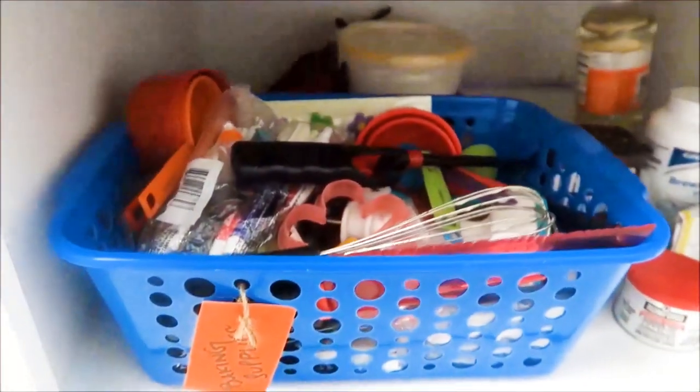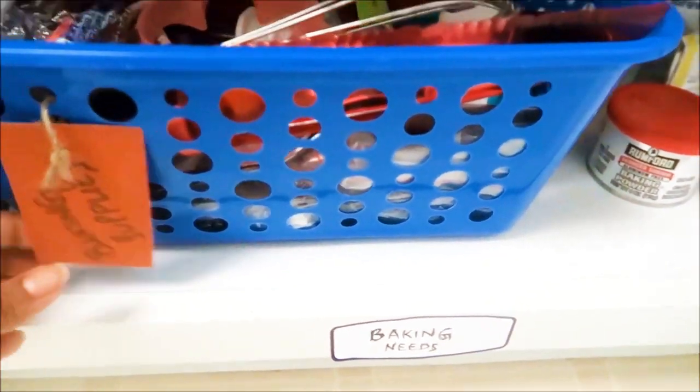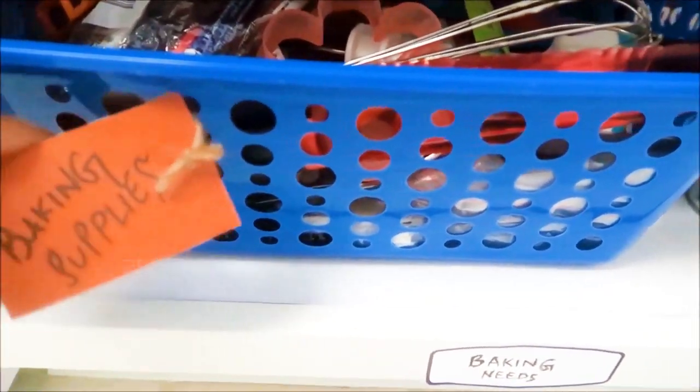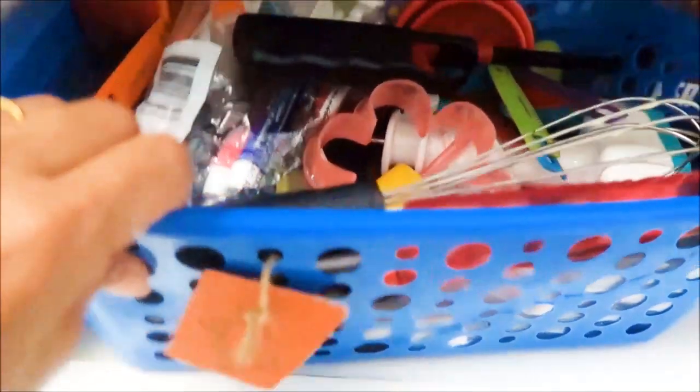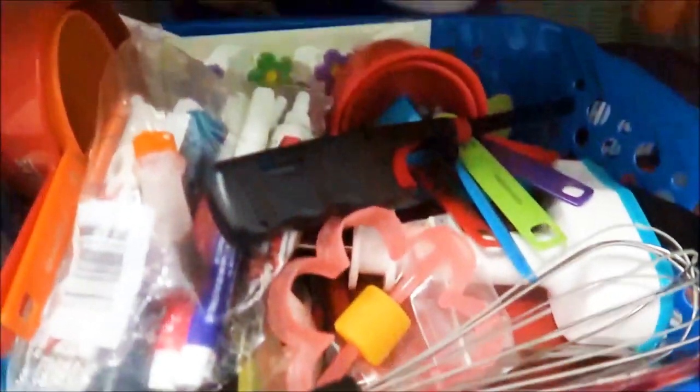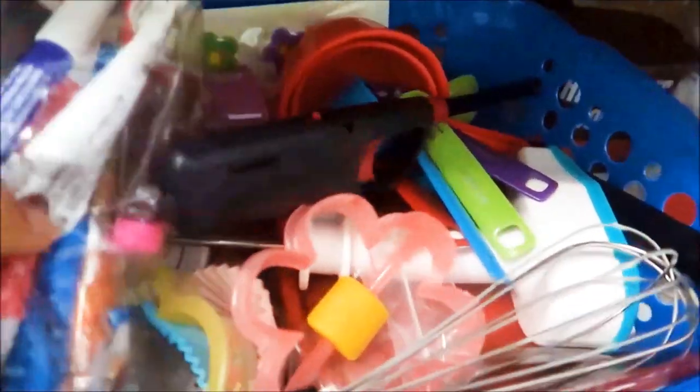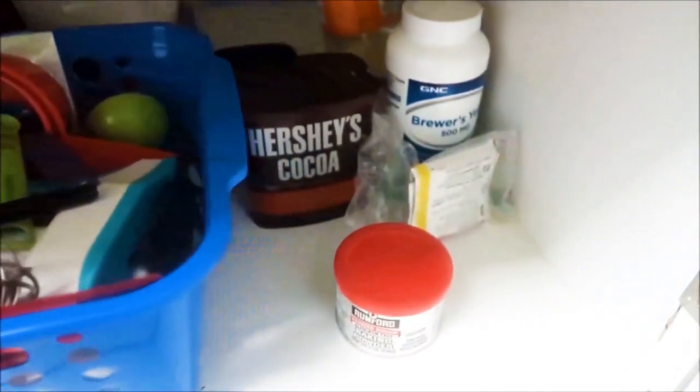Under that I have this place where I keep all my baking needs. In this bin I have all the items that I use during baking, like whisk, cookie cutters, etc. Also I keep other ingredients like baking powder, cocoa powder, etc. over here.